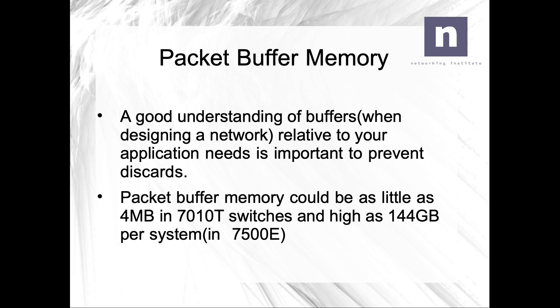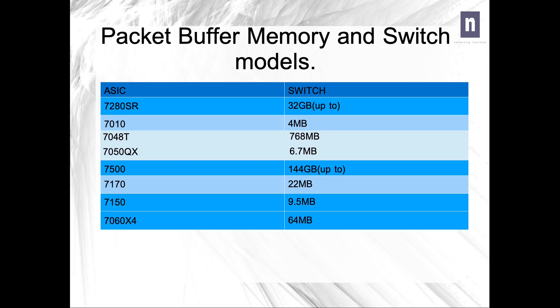Packet buffer memory can be as little as 4MB in a 7010T switch or as high as 144GB in a chassis switch like the 7500E. The 7010T is a 48-port copper switch with a couple of uplinks, and the 7048T is a very similar form factor with 48 copper ports and a couple of fiber uplinks. Notice the wide variation in packet buffer memory between the 7010 and 7048, even though they could almost serve as like-for-like replacements.